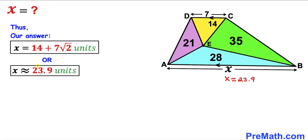So our final answer is x equals 14 plus 7 times the square root of 2 units, which is approximately 23.9 units. Thanks for watching, and please don't forget to subscribe to my channel for more exciting videos.